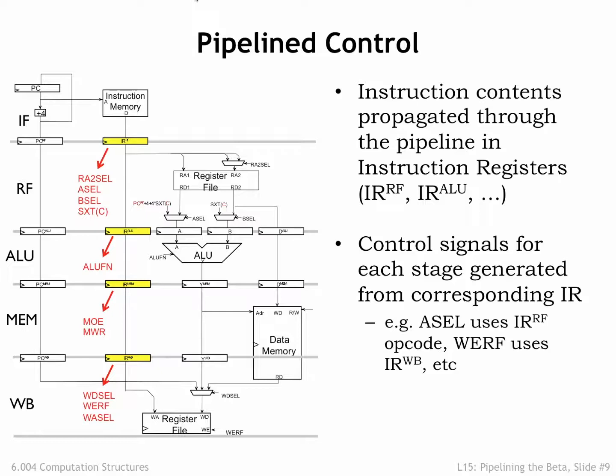The RF stage needs the RA, RB, and literal fields from its instruction register. And the WB stage needs the RC field from its instruction register. The required logic is very similar to the unpipelined implementation, it's just been split up and moved to the appropriate pipeline stage. We'll see that we will have to add some additional control logic to deal correctly with pipeline hazards.